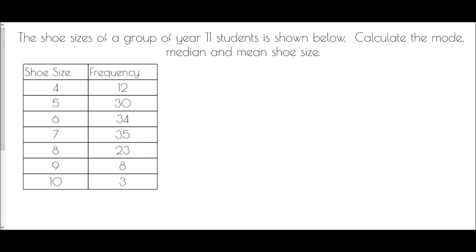Now we'll put all of this together in one example. The shoe sizes of a group of Year 11 students is shown below — calculate the mode, median, and mean shoe size. For the mode we need to look down the frequency column and find the biggest value. Going down: 12, 30, 34, 35 — that is the biggest number, and it corresponds to a shoe size of seven.